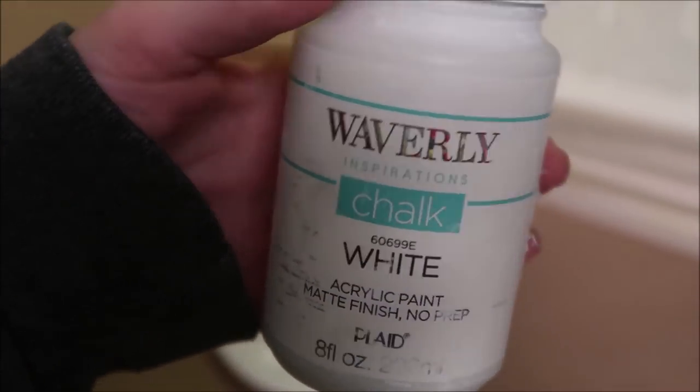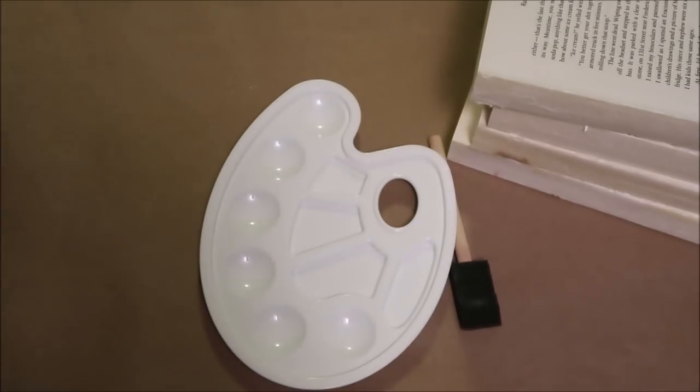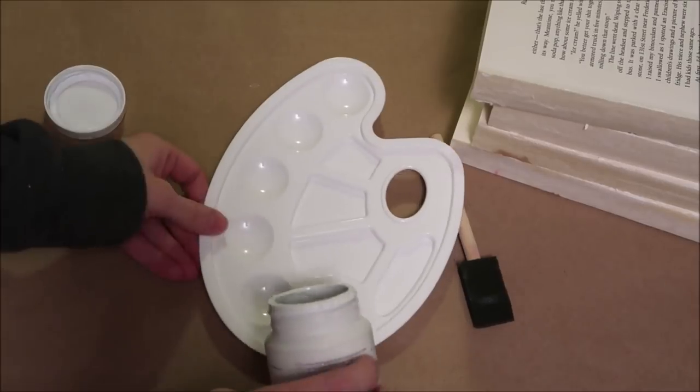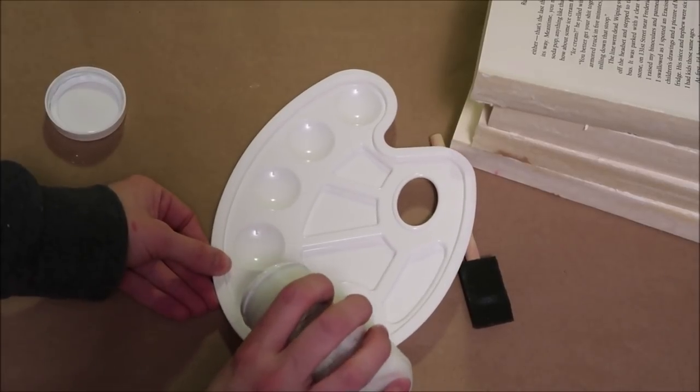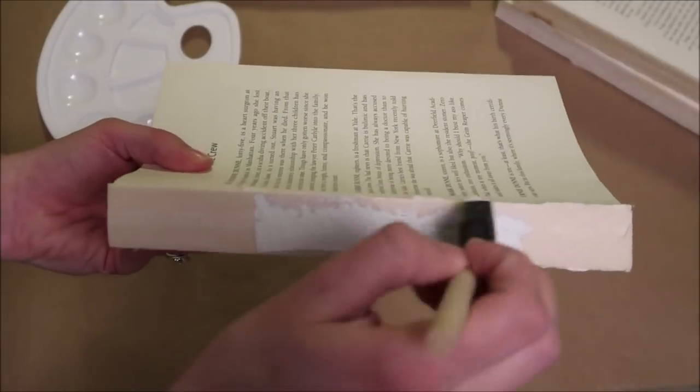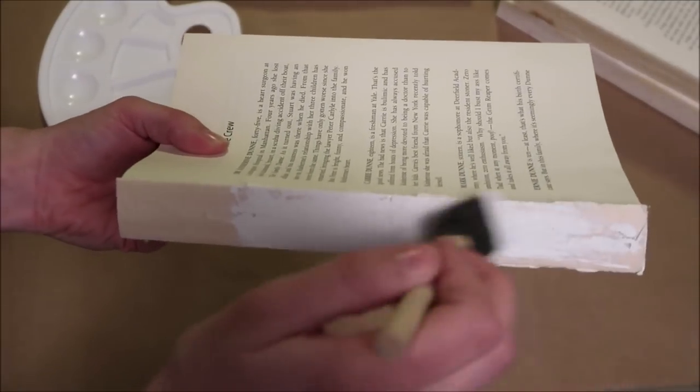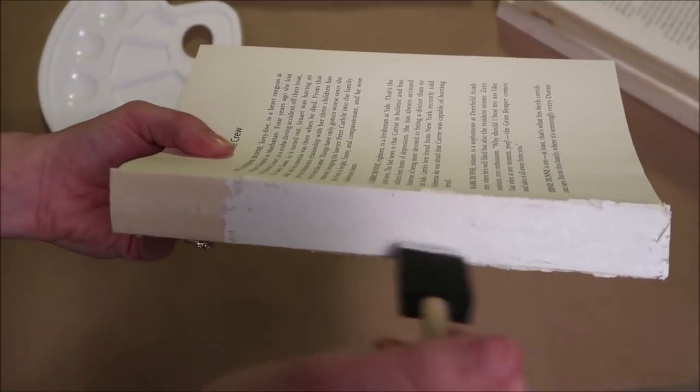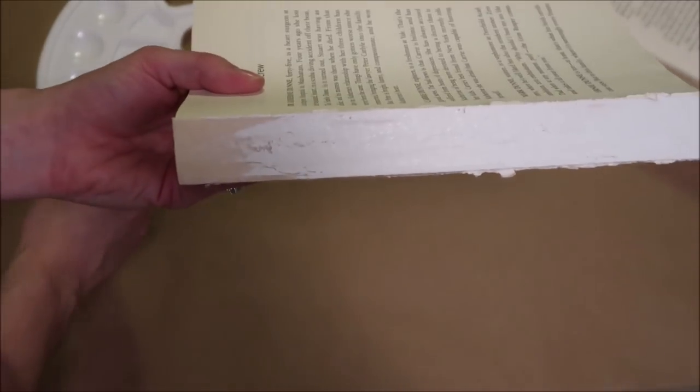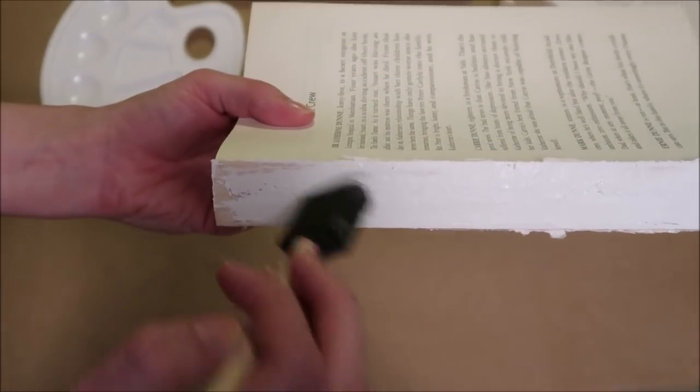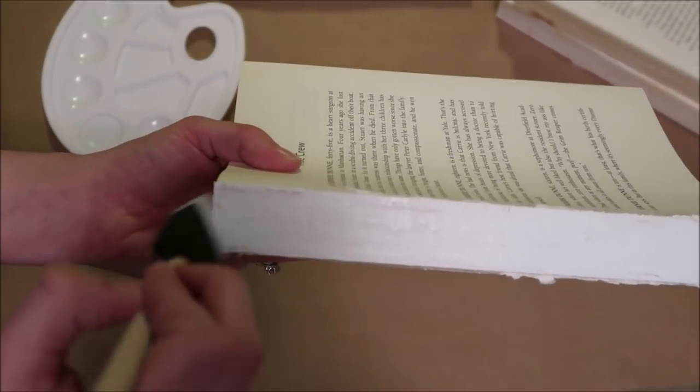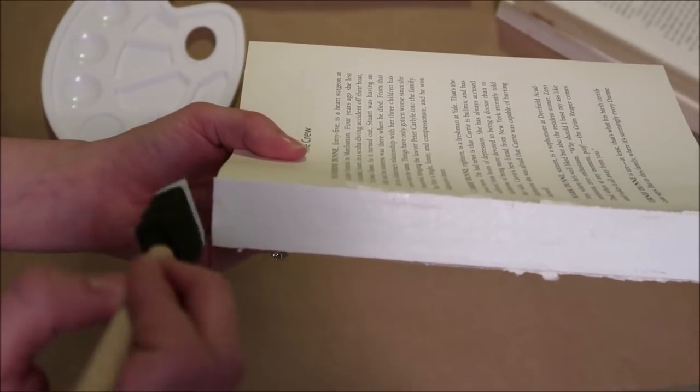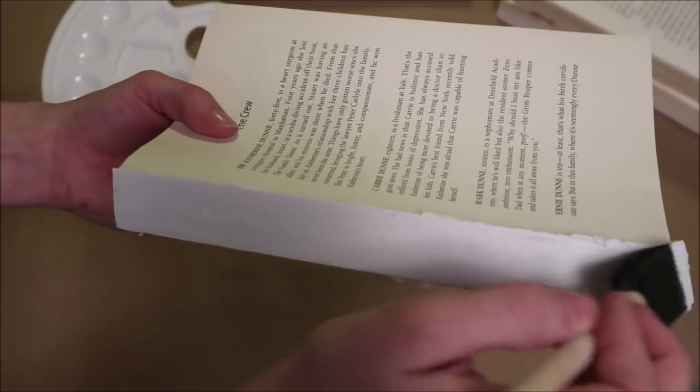After that I grab my white Waverly chalk paint. This is my favorite type of acrylic paint and I buy it at Walmart. I shake it up and paint the spines of the book. These spines had a yellowish tint to them so the white just makes it look a little prettier and it will still have that rustic look. I do this for all of these books as well. Then while those are drying I'll show you how I cut out my stencil from the Cricut.